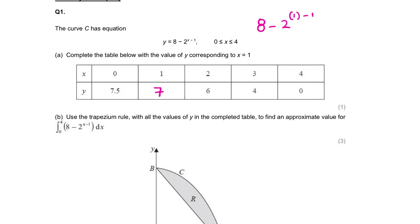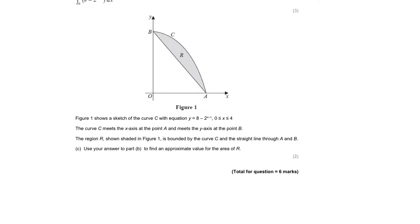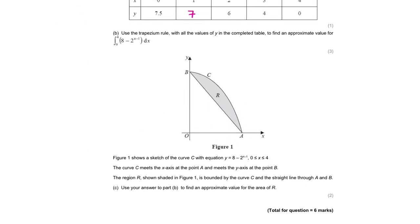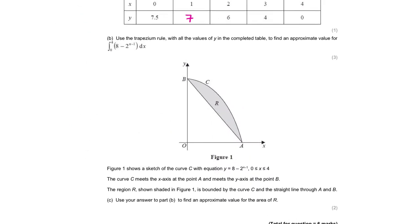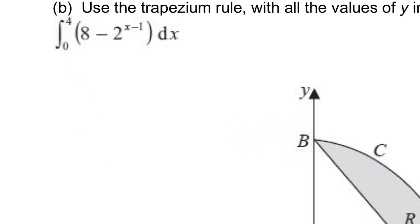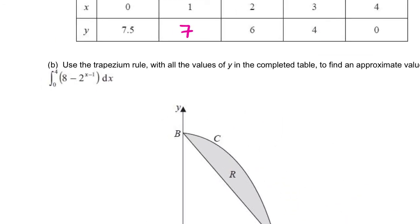It then says use the Trapezoid rule with all the values of Y in the completed table to find an approximate value of the integral. The Trapezoid rule is as follows — and this is given to you in the formula sheet.